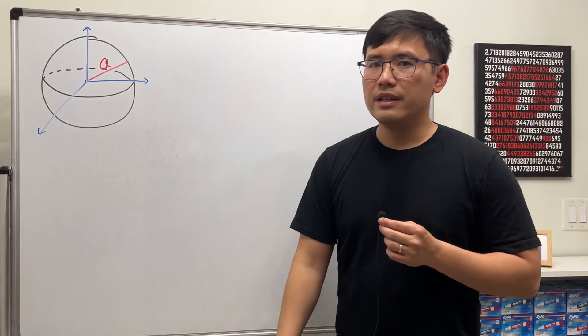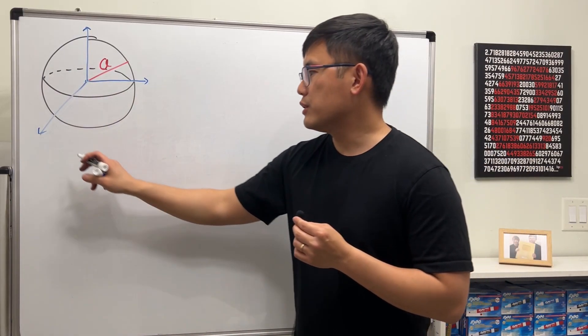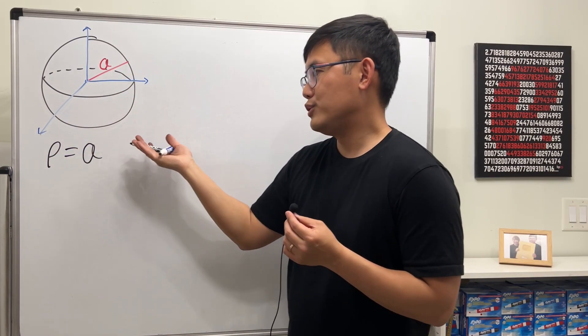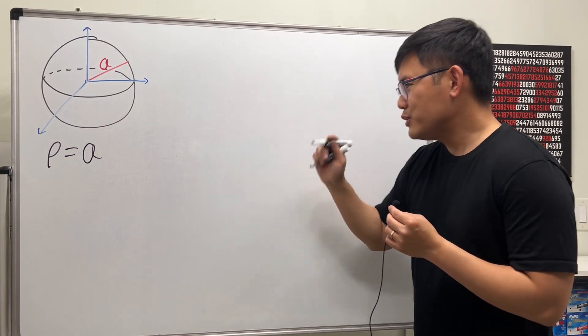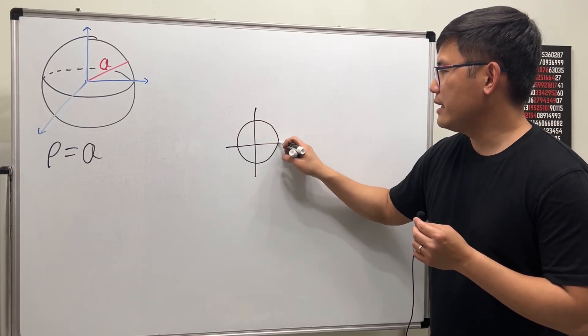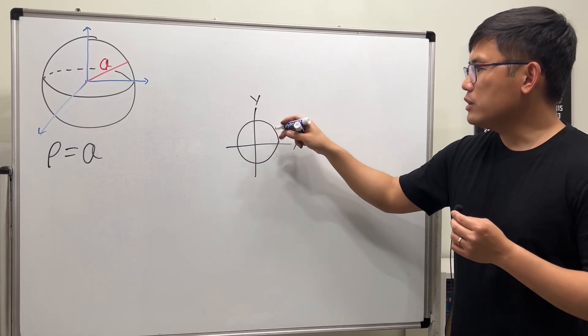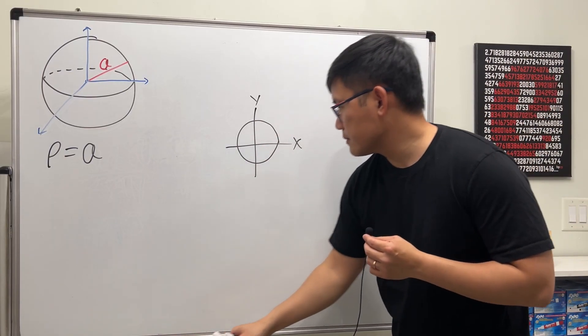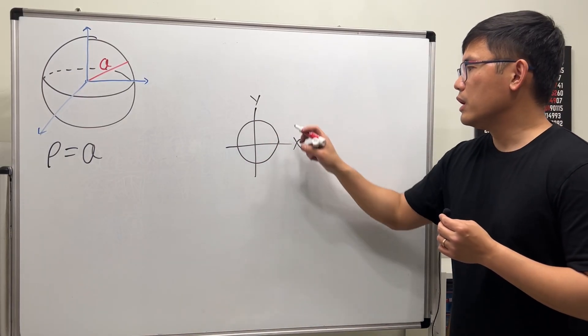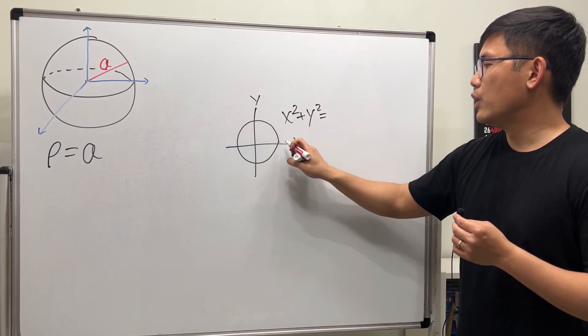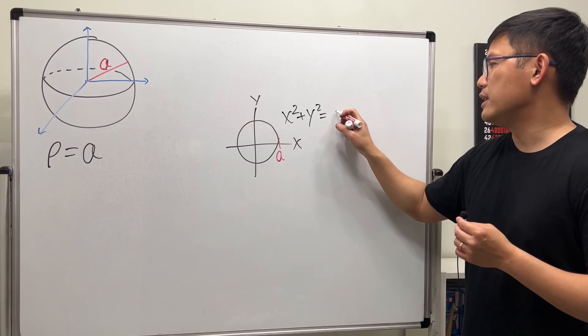Based on this, the equation of the sphere is just simply ρ equals whatever the radius is. Just like that. And just real quick, this is like saying if you are on the xy plane, we know the equation of the circle like this, center is 0, 0, it's just x squared plus y squared equals whatever the radius is, and then we square that.